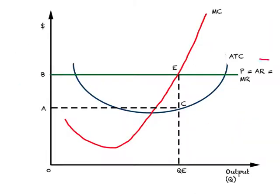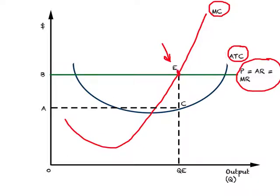We know how a firm determines its price, and we are looking at this from the perspective of one seller. On this diagram we have price equals average revenue equals marginal revenue. I have also drawn the marginal cost curve and the average total cost curve. Look at point E — this represents equilibrium for the firm, the best point, because at this point MR equals MC and the MC curve intersects the MR curve from below. Both conditions are satisfied, so this represents equilibrium for a perfectly competitive firm in the short run. We can drop this point to the horizontal axis to determine how much output will be produced — it will be OQE.